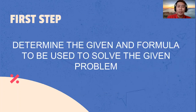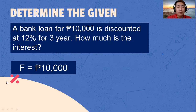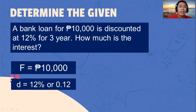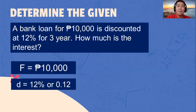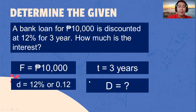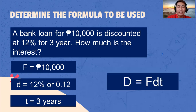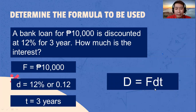First step: let's identify the given and formula to be used. The problem is: a bank loan for 10,000 pesos is discounted at 12% for 3 years. How much is the interest? The maturity value is 10,000 pesos. The discount rate is 12%, or 0.12 — we convert by dividing 12 by 100. The time is 3 years, and we need to determine the bank discount. The formula is: D equals maturity value multiplied by discount rate multiplied by time.